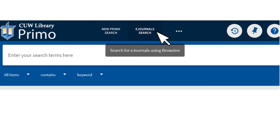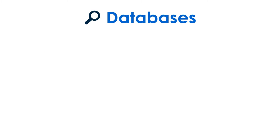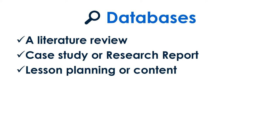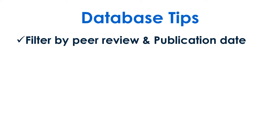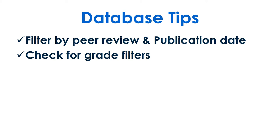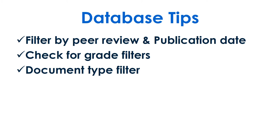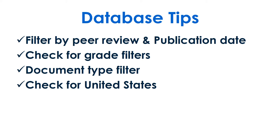Education databases are another place to search. Choose these for literature reviews when you need a case study or research report, or for classroom content for students, which you can filter by grade level or lexile reading level. For scholarly articles, filter your results by peer review and publication date based on assignment requirements. Then consider filters by grade or education level. The document type filter can help you find research reports or case studies. Be sure to check where the research is from in the item details.